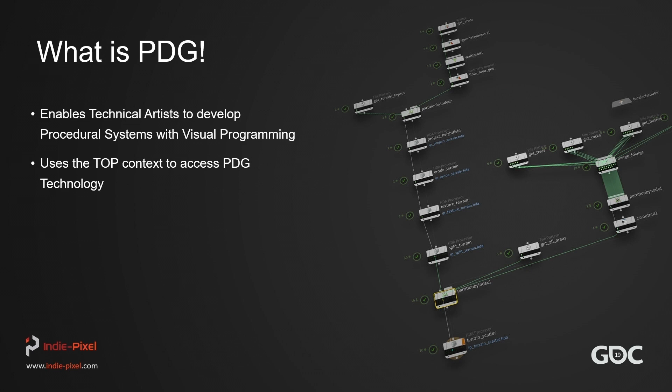We access PDG through the TOP context. TOPs are the task operators, and PDG stands for procedural dependency graph. The previous Houdini engine workflow meant that none of the HDAs actually knew anything about each other, and PDG takes care of that. It enhances the Houdini engine workflow and really changes the way we think about and utilize the Houdini engine in our game engines.